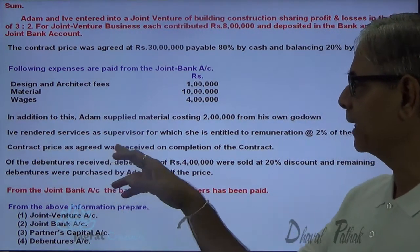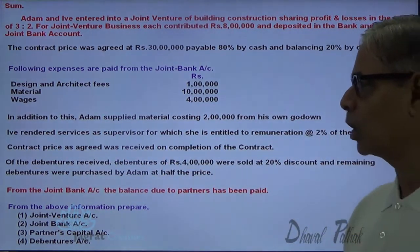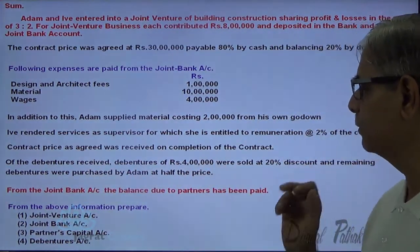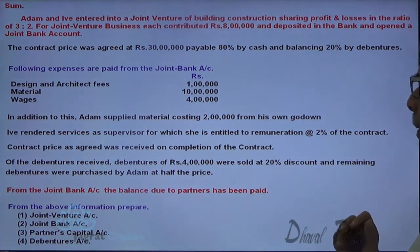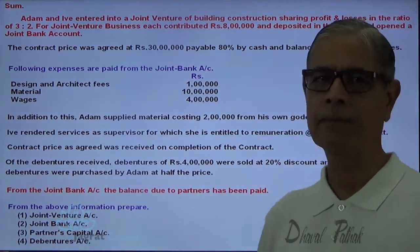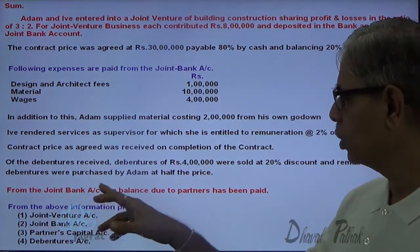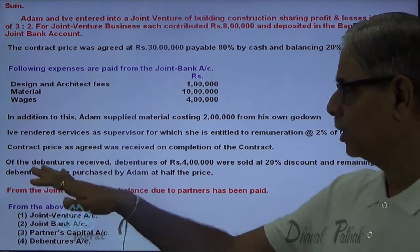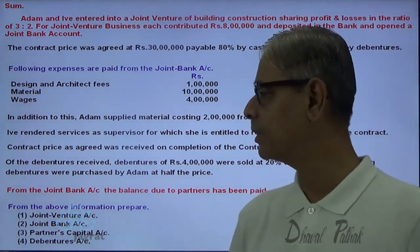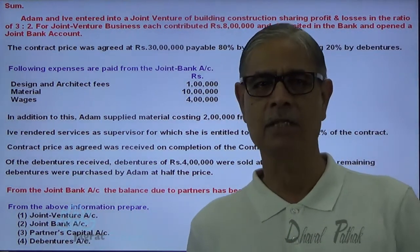Contract price as agreed was received on completion of the contract. All the debentures received — debentures of rupees 4 lakhs were sold at 20% discount, and remaining debentures were purchased by Adam at half the price. From the joint bank balance, the partners have been paid. Partners are paid ultimately on conclusion of the joint venture. You are required to prepare joint venture account, joint bank account, partners' capital account, and debentures account.